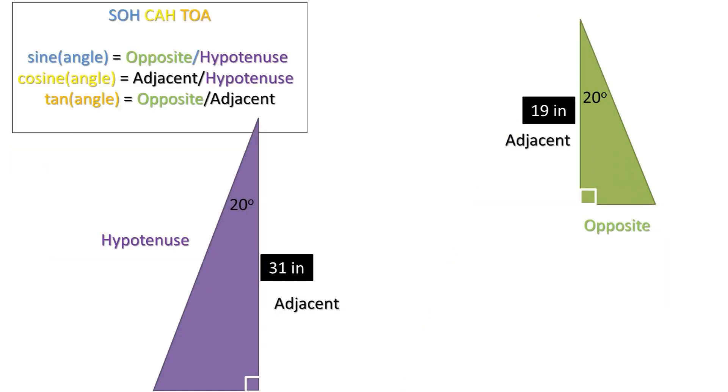We will be using the property of right triangles, or triangles with one 90 degree angle, SOH CAH TOA, to solve this problem.